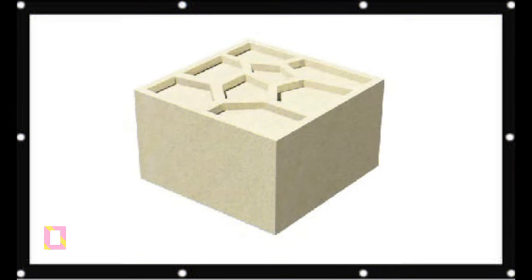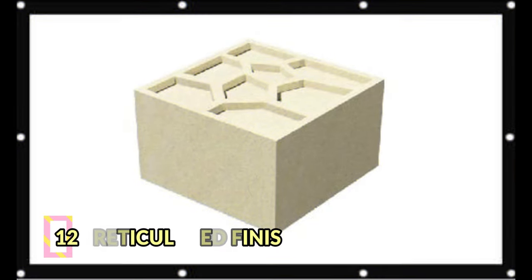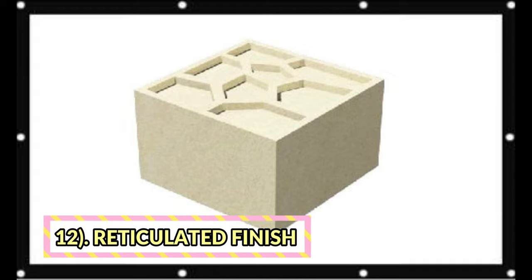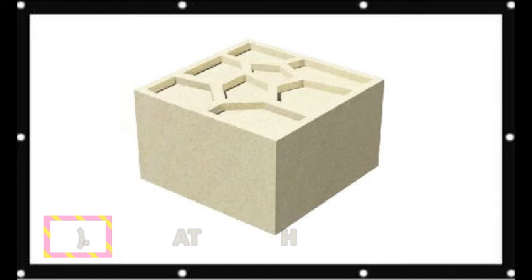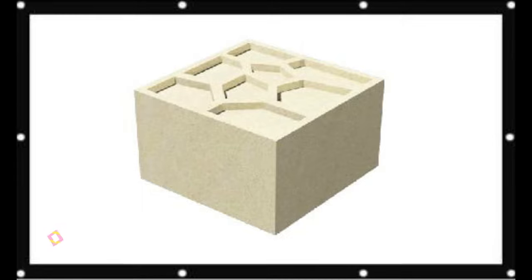Reticulated finish for stones: Reticulated finish is a special type of finish in which a margin of 20 mm wide is marked on the sides of the surface and an irregular sinking type finish is made in the middle area. For that sunk area, a margin of 10 mm wide with 5 mm depth is provided. Dots are marked in the sunk surface using a pointing tool.